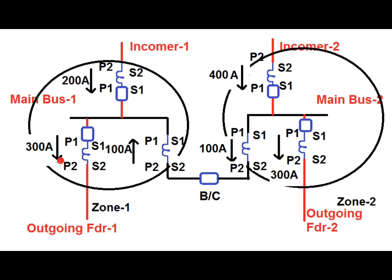Under normal load condition, outgoing feeder 1 and outgoing feeder 2 each have a load current of 300 amperes, while incomer 1 supplies 200 amperes and incomer 2 supplies 400 amperes. Since outgoing feeder 1 requires 300 amperes but incomer 1 only supplies 200 amperes, the remaining 100 amperes is supplied by incomer 2 via the bus coupler. Under normal condition, the zone 1 differential current is the sum of all CT currents connected to the zone 1 location — that is, incomer 1, outgoing feeder 1, and the bus coupler CT current.